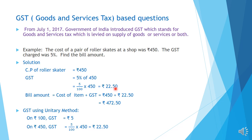Therefore, the bill amount or the sale price of the item is equal to cost of the item plus GST. Cost price is Rs. 450 plus GST Rs. 22.50. On adding we get Rs. 472.50. Therefore, the bill amount is Rs. 472.50.